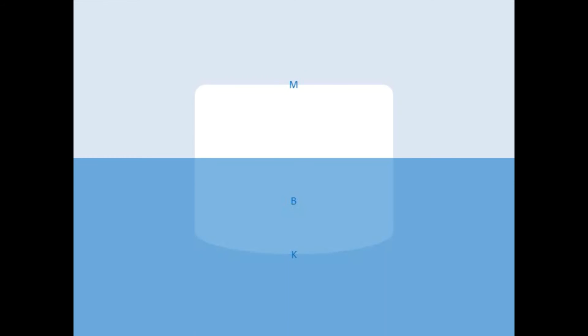Metacenter is the highest point to which the center of gravity may rise and still permit the vessel to have positive stability. When upright, KB is the linear distance from the keel to the center of buoyancy.